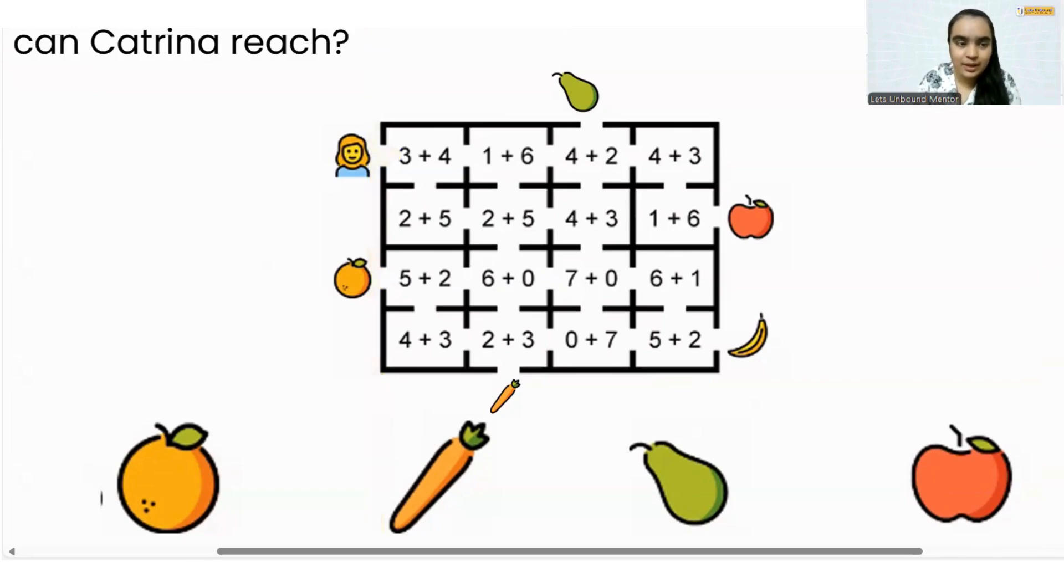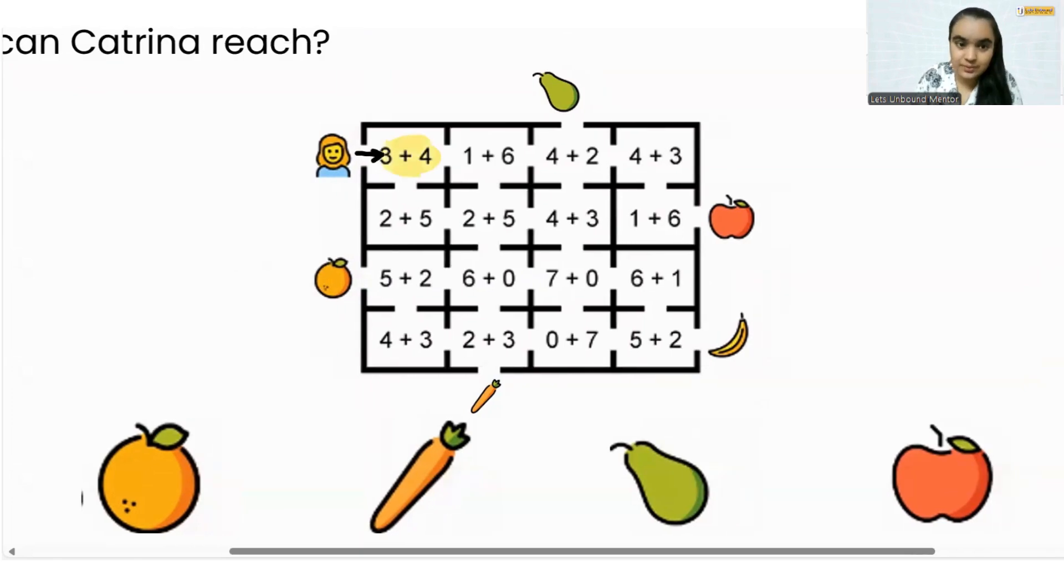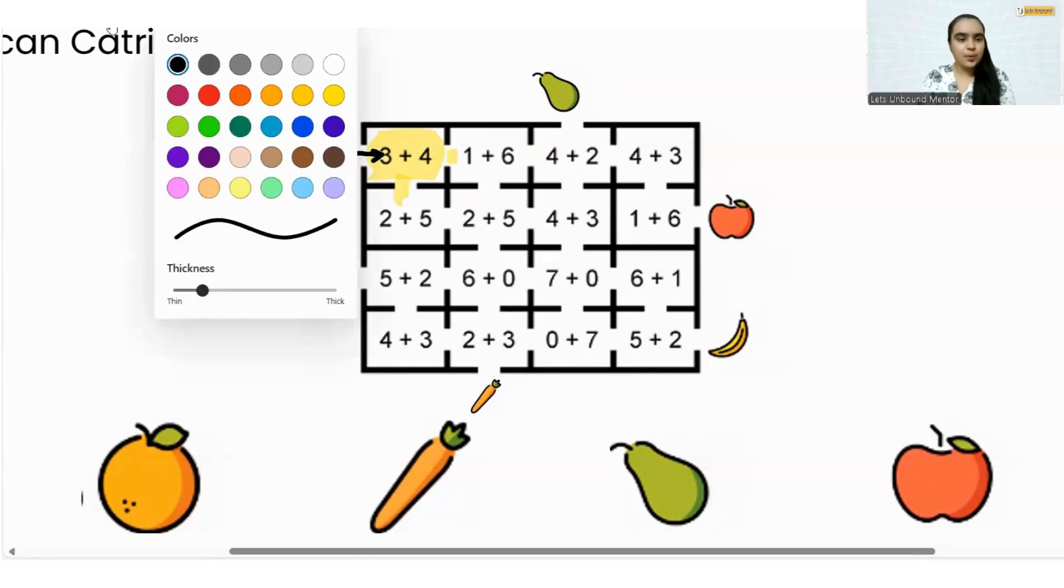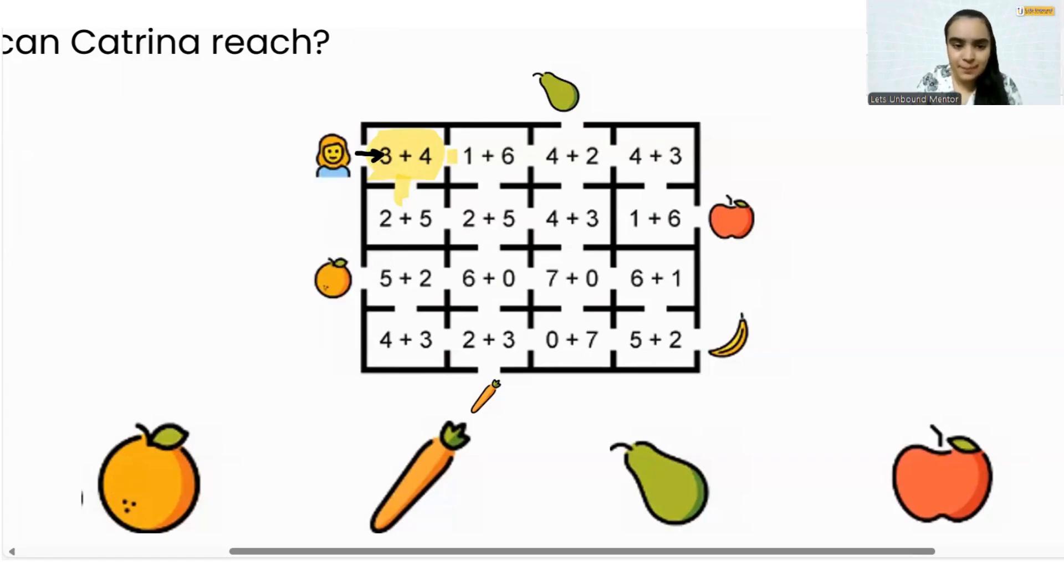For sure, Catrina is going to start with this room because 3 plus 4 is 7, correct? Now after that, Catrina can go down or can go over here as well. So where will Catrina go? Let's go step by step. Maybe let's go over here, right, because 1 plus 6 is 7 again.